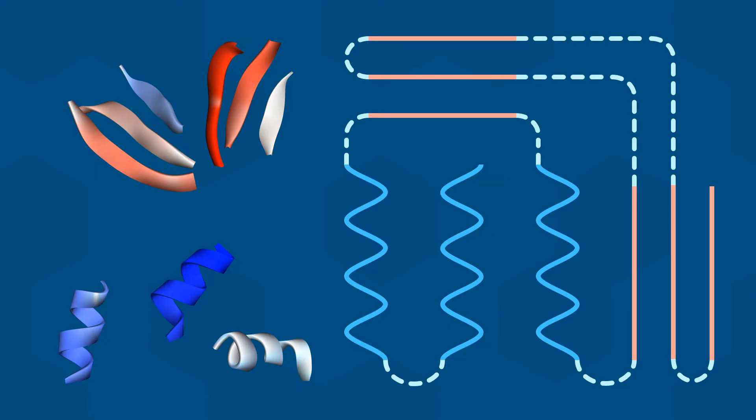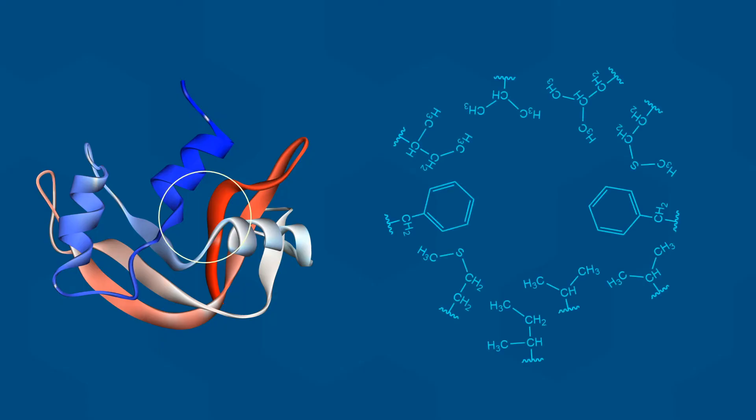The tertiary structure of a protein is due in large part to non-covalent interactions between the side chains within the protein. For example, in this region of RNase, there is an inner core of hydrophobic side chains in close proximity to each other.